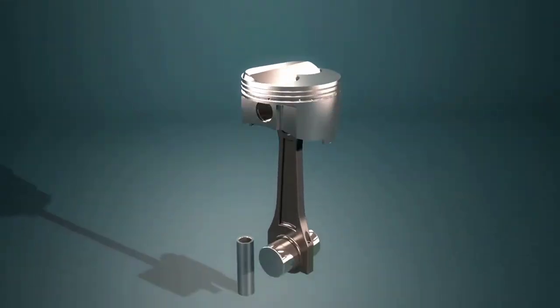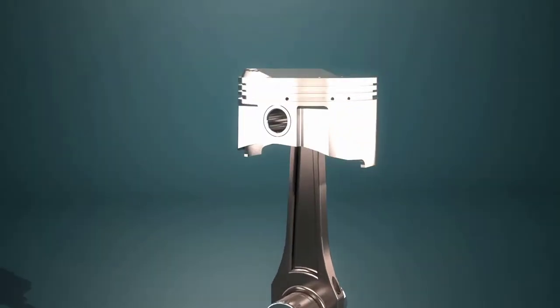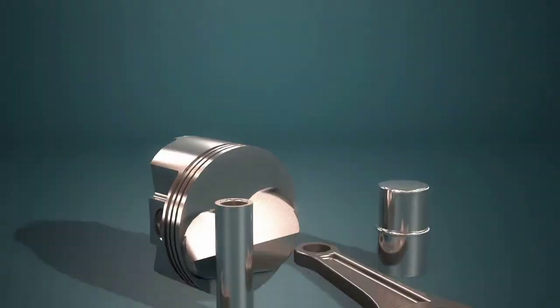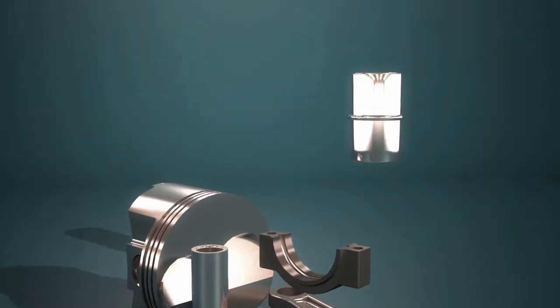The piston is connected to the crankshaft through a connecting rod, often shortened to rod or conrod. These parts together are known as the piston assembly.